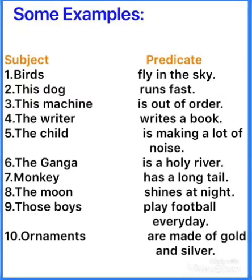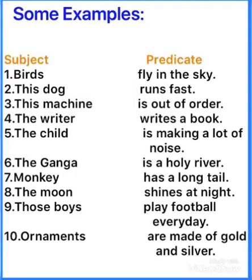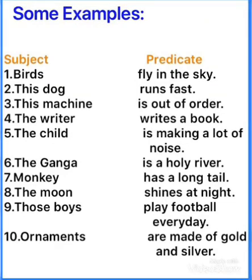Sixth: 'The Ganga is a holy river' — so the Ganga is name of a river. What they are talking about? Ganga is a holy river, so Ganga ek sacred river hai. Seventh: 'Monkey has a long tail' — here monkey is an animal, so monkey subject ho gaya. Us ke baare mein baat yeh ho rahi hai ke monkey has a long tail, so 'has a long tail' is predicate. Eighth: 'The moon shines at night' — baat ho rahi hai moon ke baare mein, so the moon here is subject.